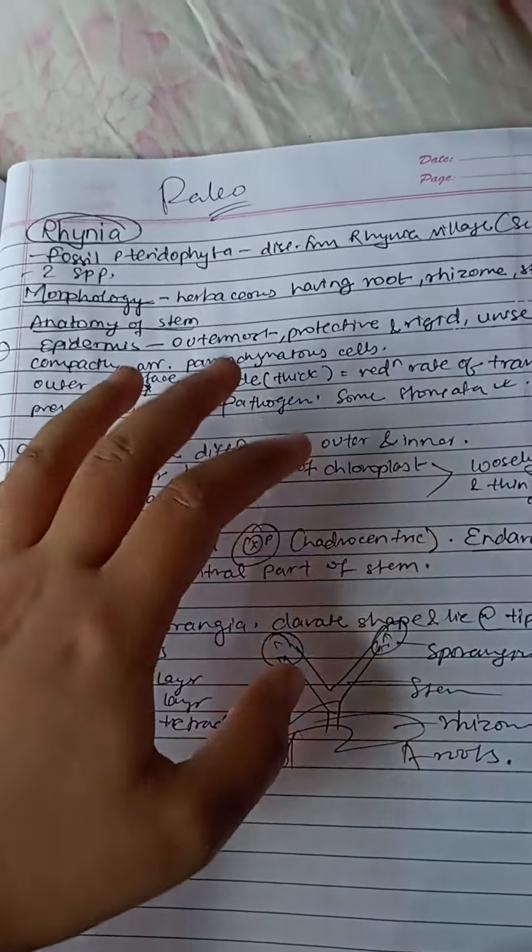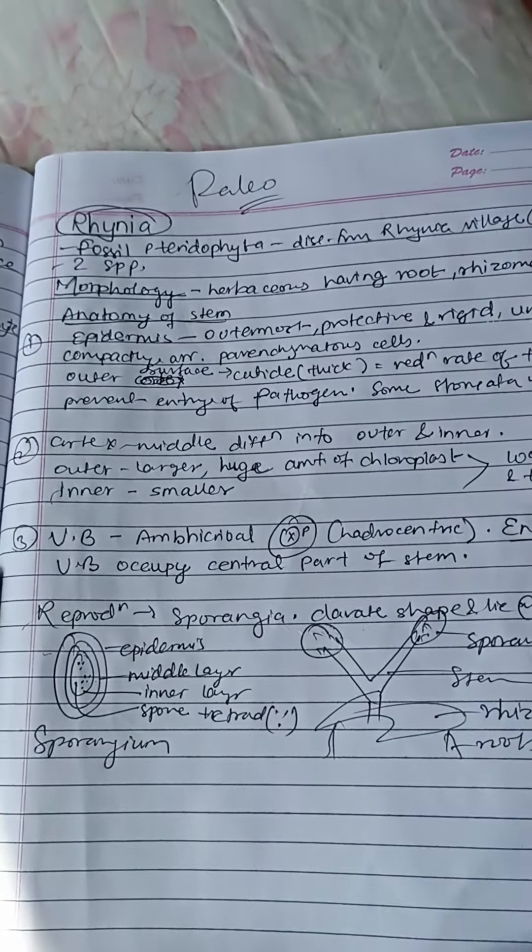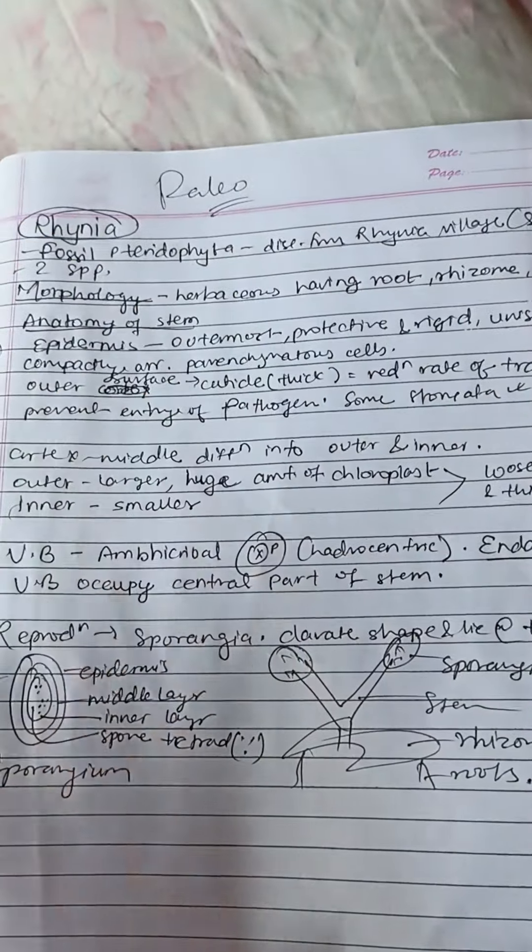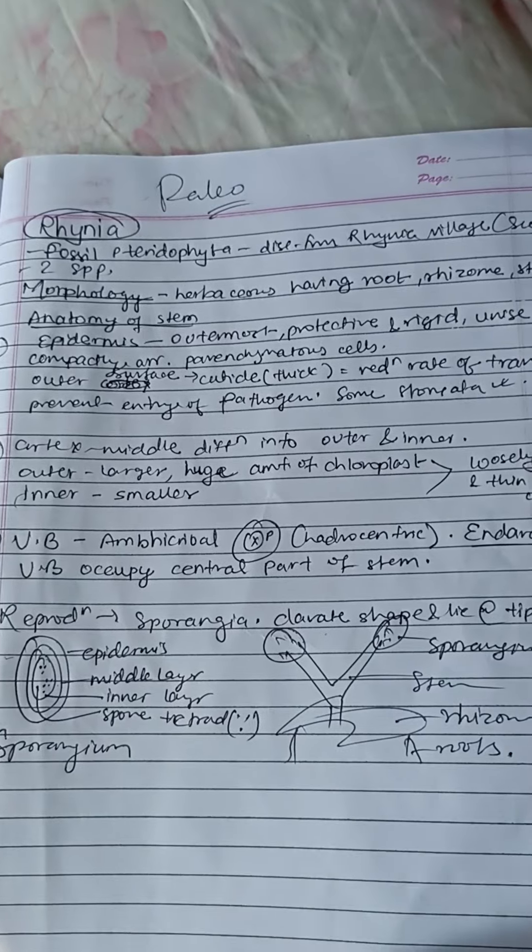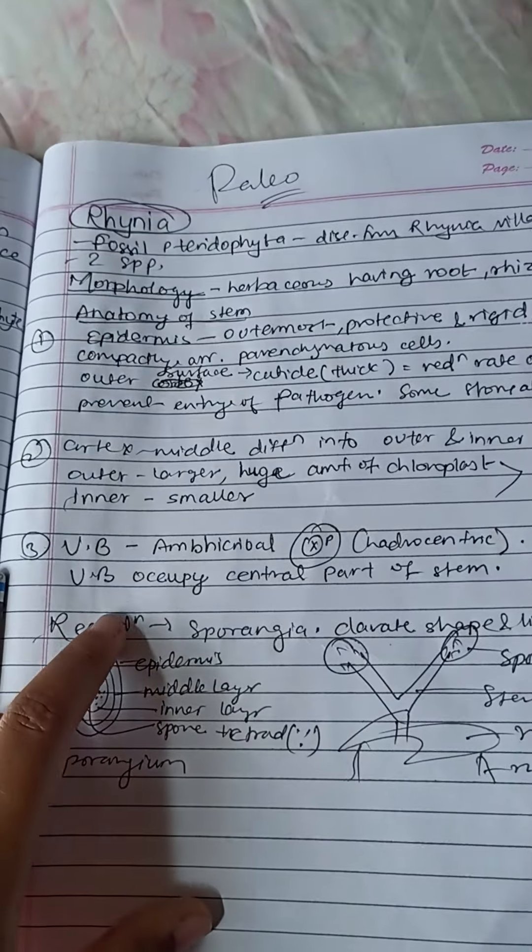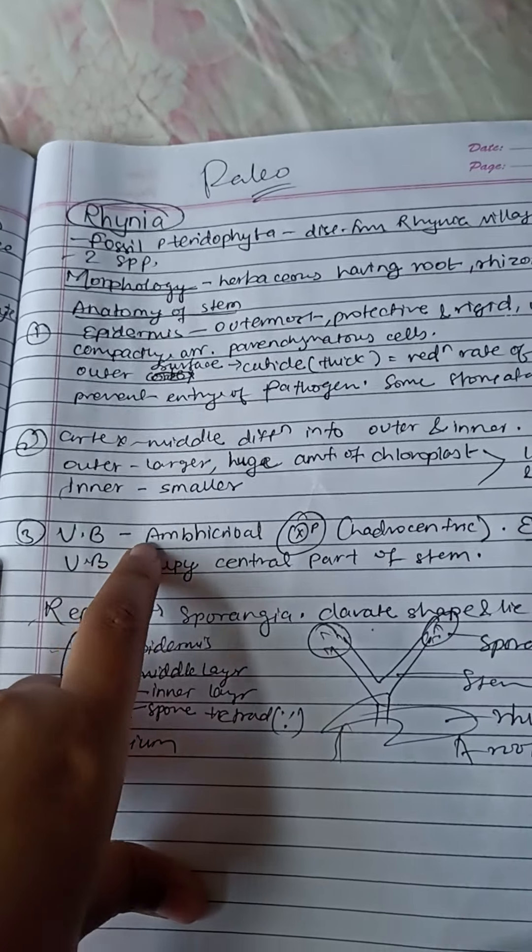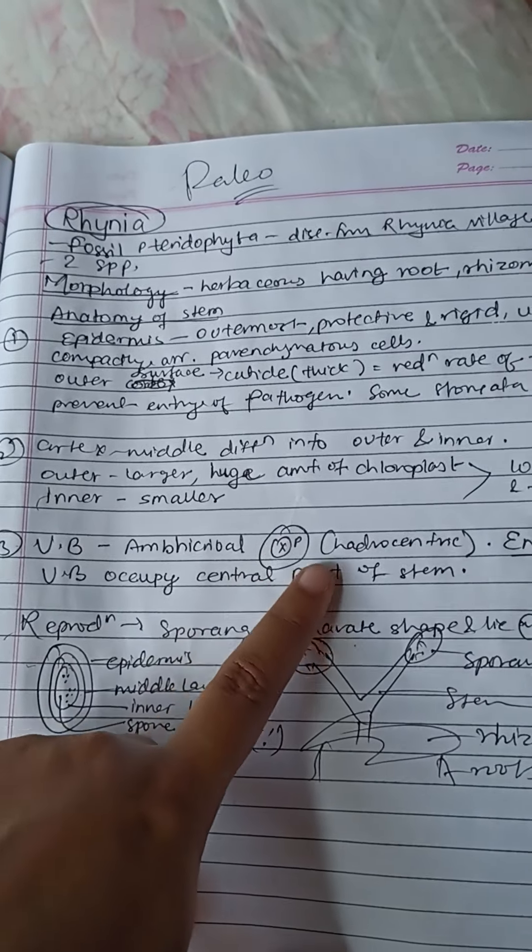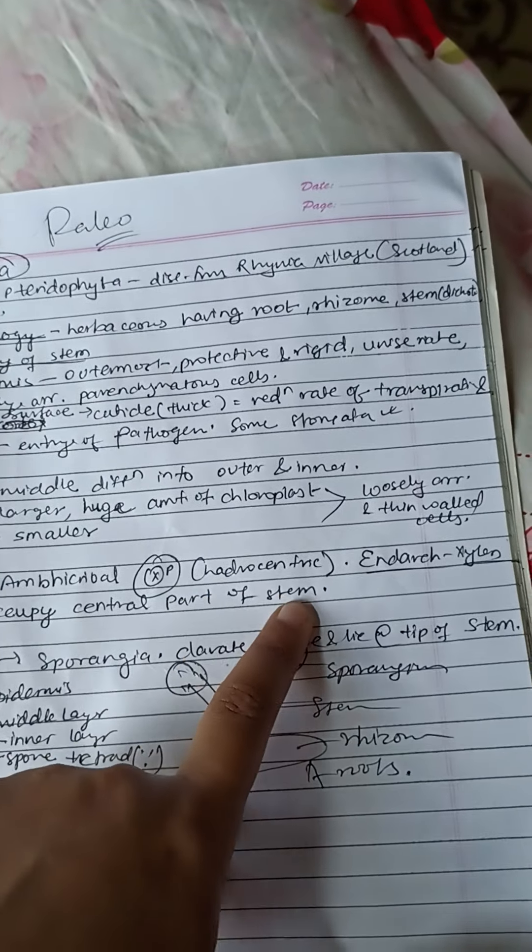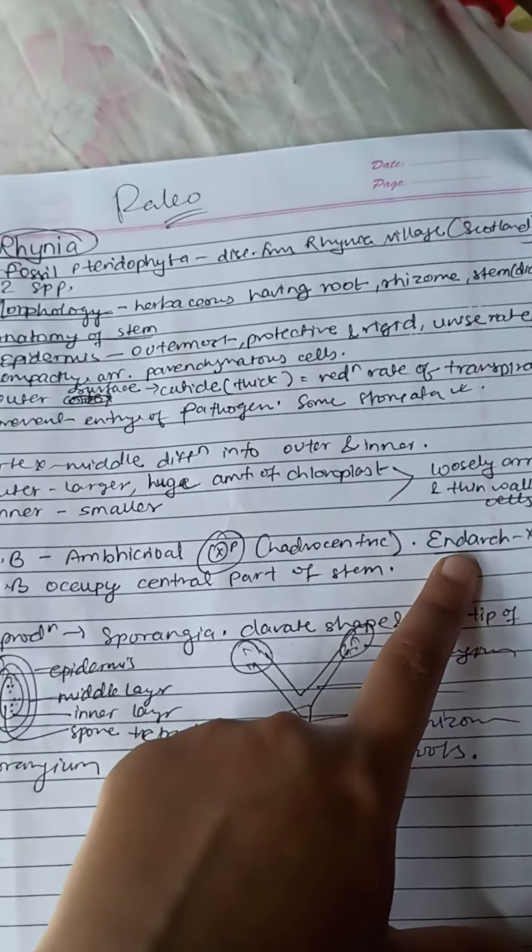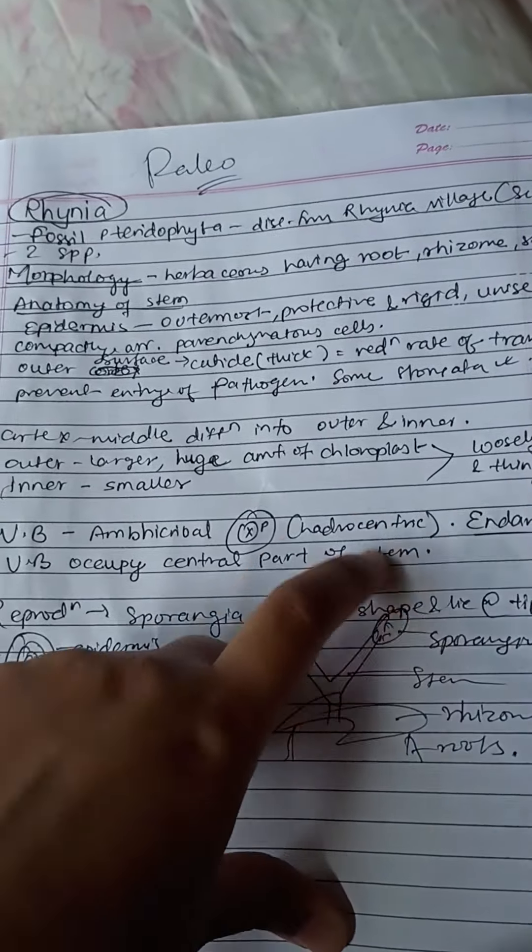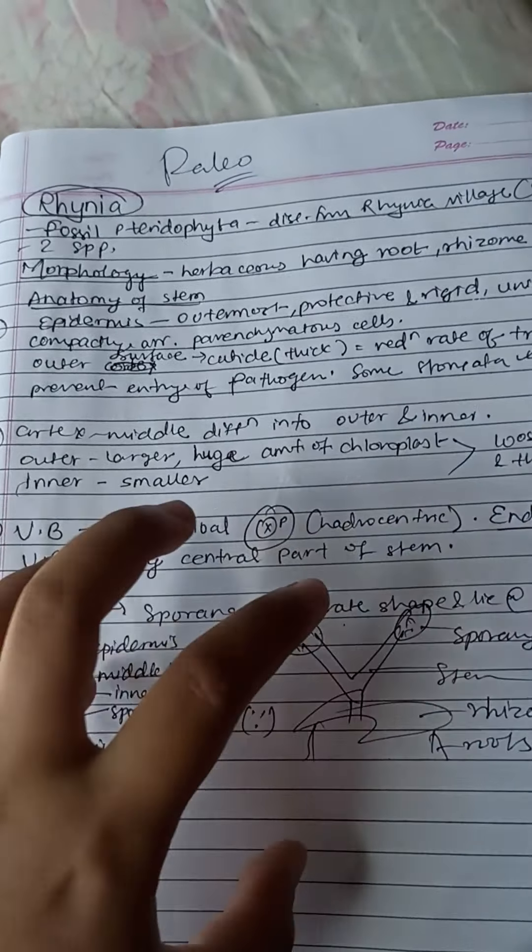There are also protoxylem, metaxylem, and vascular bundles occupy the central part of the stem.